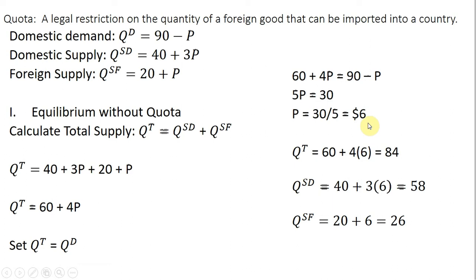To see who will be bringing that product to the market, first we'll plug the $6 back into the total supply equation. The 60 + 4P, so plugging $6 into that equation, the total quantity supplied will be 84.